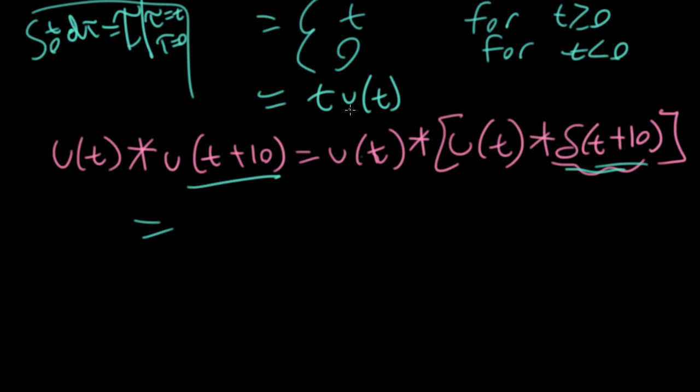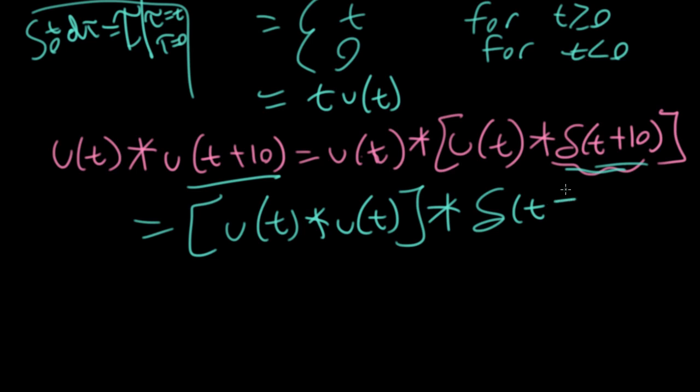Well, I know from the associativity property that I can swap the order, or I can swap where I put the brackets. So I could write this like this, put the brackets over here.